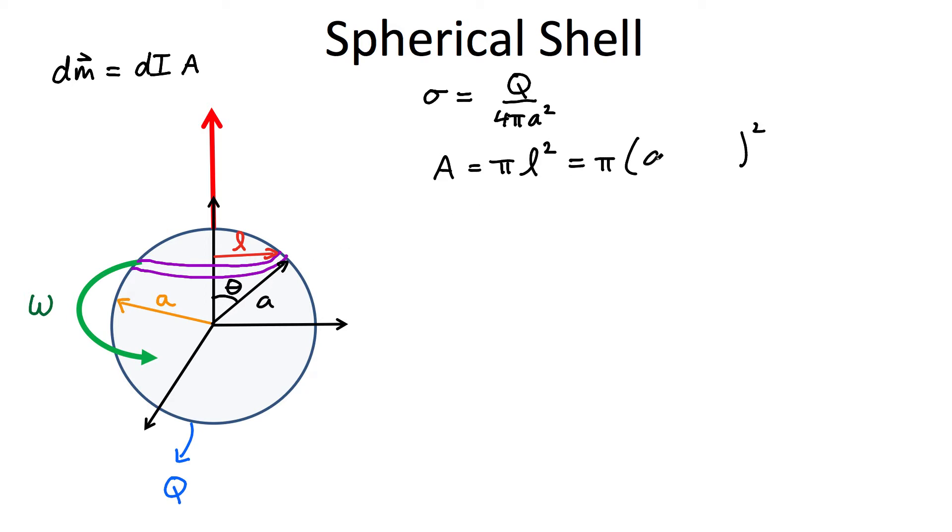This here is the angle theta. So we can also define it in terms of the radius. So here we're going to have pi. And I have to square it. And the value L is simply A sine theta. So I have A sine theta here. And now if you just distribute this, you have pi A squared and sine squared theta. So I have an expression for my area.